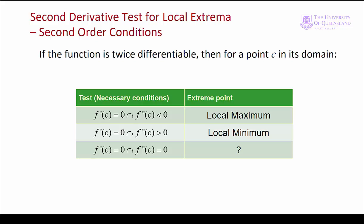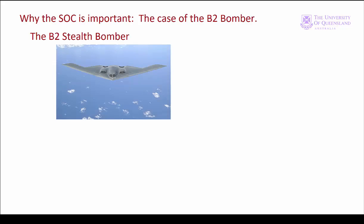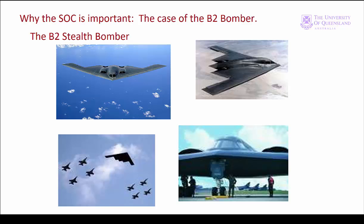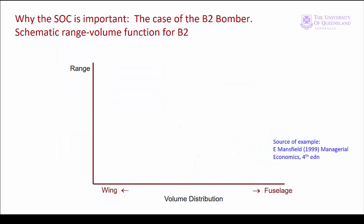Before we put the second derivative test into practice, let's look at a historical example of why it's important. Consider the B-2 stealth bomber. These are mighty machines and in 1977 dollars, they cost about 750 million dollars each to produce. It's reported by Mansfield that the design of the B-2 bomber is flawed. The engineers who selected the flying wing configuration found stationary points in the range-volume function but assumed the stationary point was a maximum without checking the second order conditions. Mansfield claims the flying wing design is actually a minimum for the range-volume function — probably the type of mistake you gloss over on your CV.